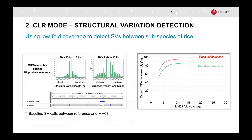Similar to assembly, continuous long reads are useful for characterizing structural variants in plant genomes. We looked for both small and large SVs between the rice reference genome and an indica subspecies known as MH63. Using a high-quality genome assembly from high-coverage PacBio data as the ground truth, we subsampled the CLR data and called SVs using a mapping-based method. We showed that recall of insertions and deletions remains high even down to ten-fold coverage, providing a cost-effective way to look at variants between species or cultivars.